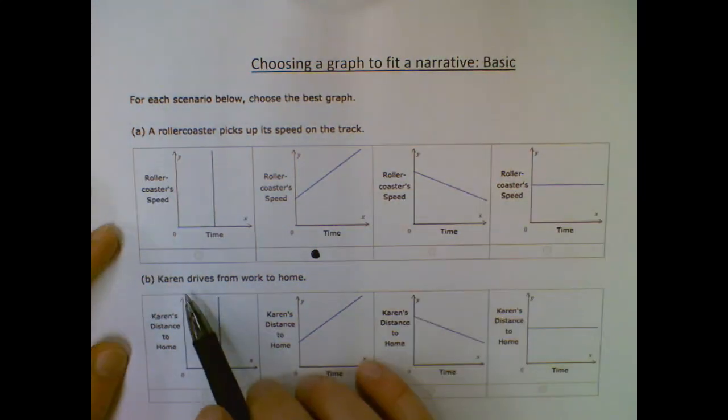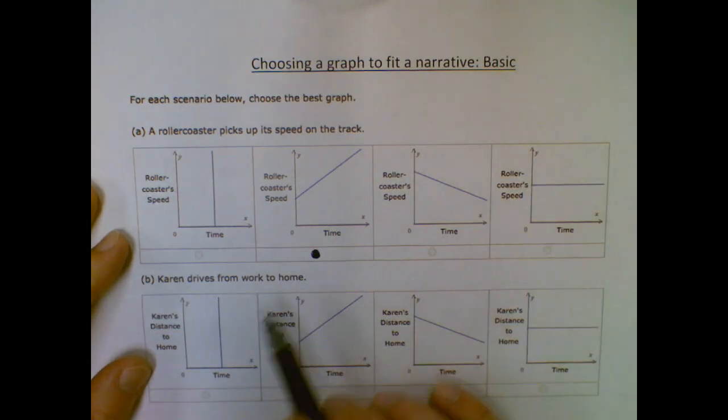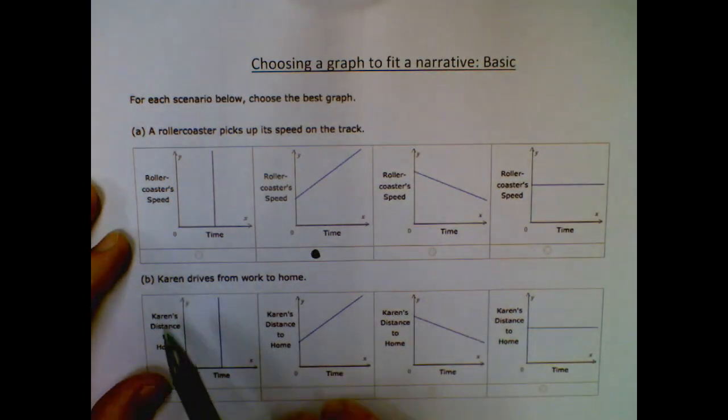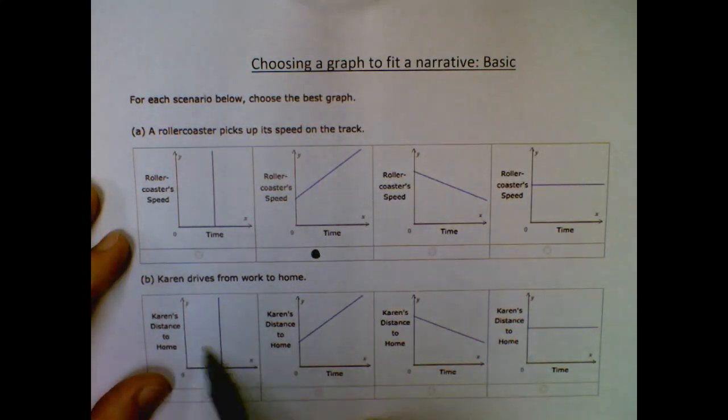And then here, Karen drives home from work. So this one is still time here, but instead of speed like the roller coaster, it's what's her distance from home? Once again, this one's not a function and doesn't make any sense, so don't pick that.